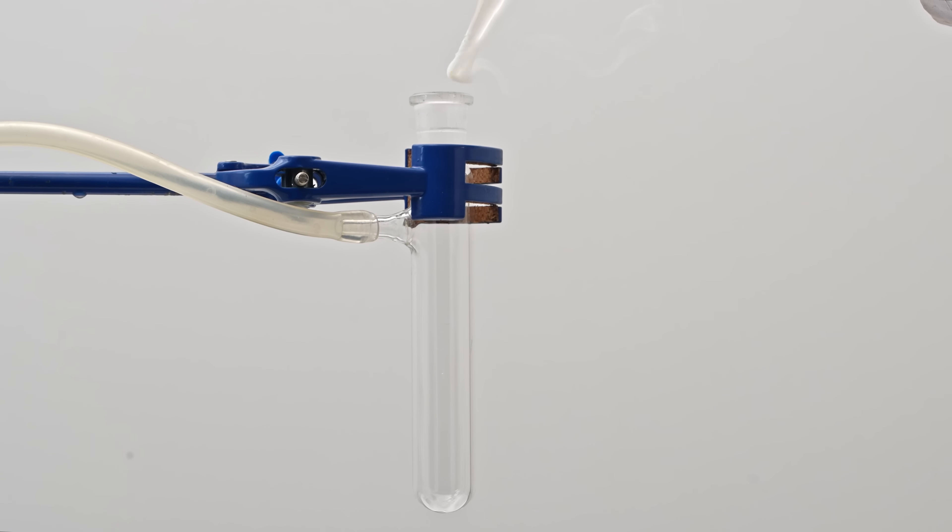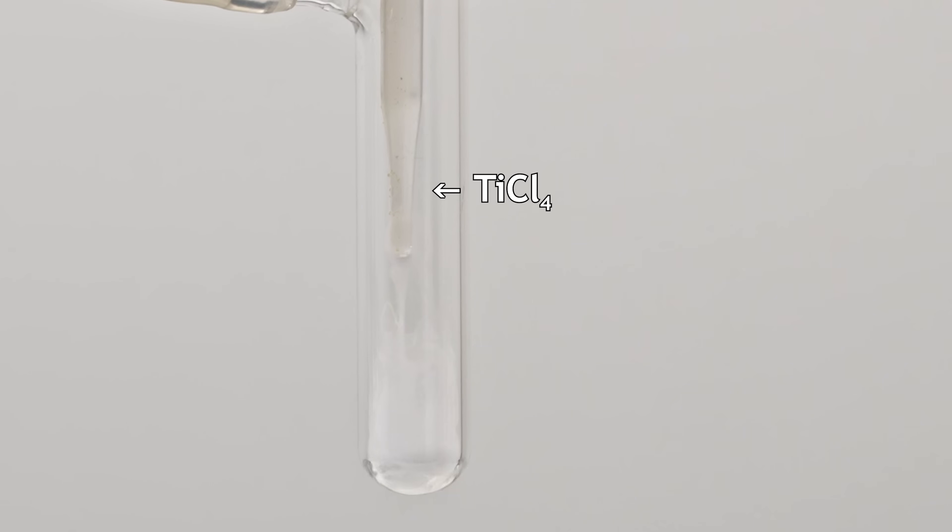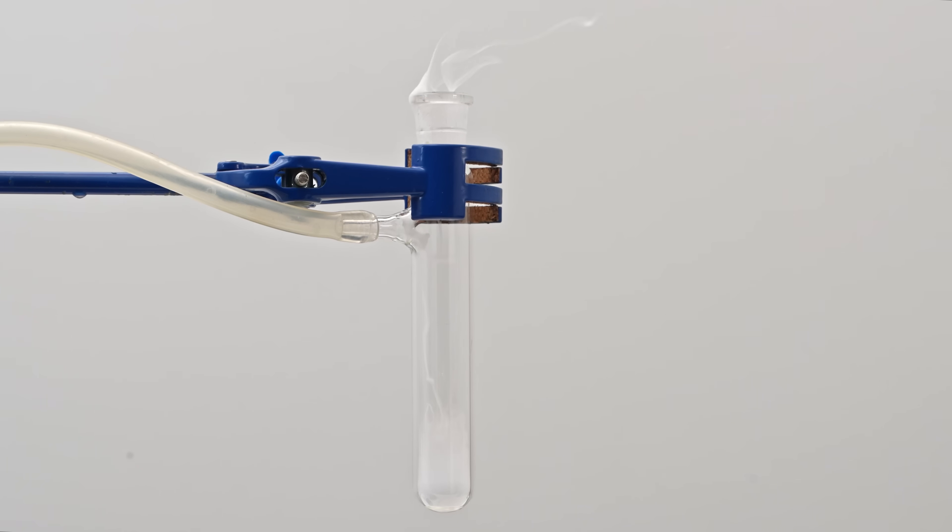Red dimers of nitric oxide can be formed easily by condensing it in the presence of a strong Lewis acid. For example, I used titanium tetrachloride. Just a few drops of this Lewis acid dimerized the nitrogen monoxide at its boiling point.